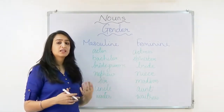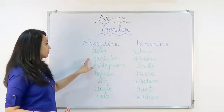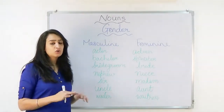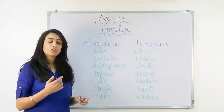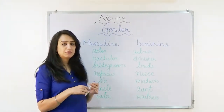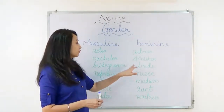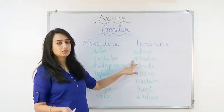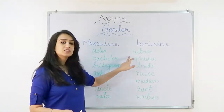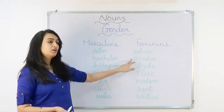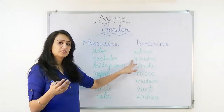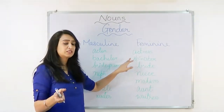But some words completely change. We have bachelor, which means a man who is not married — we call him a bachelor. Whereas a female who is not married, we call her a spinster. So there is a bachelor and there is a spinster; we don't call her a bachelor. We have given her a specific name: spinster.